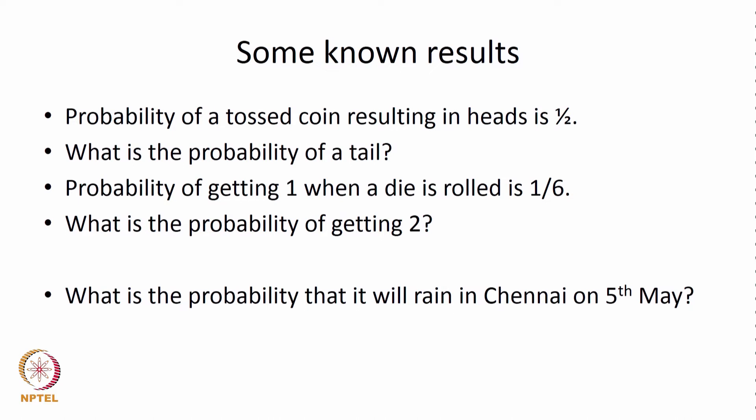Probability of getting 1 when a die is rolled is 1 by 6. A die has 6 faces with dots representing numbers — one dot represents 1, two dots represents 2, and so on. Since there are 6 faces with numbers 1 to 6, one on each face, when it is rolled the probability of getting a 1 is 1 by 6 because any one of the 6 faces can show up with equal probability. Similarly, probability of getting a 2 is also 1 by 6.